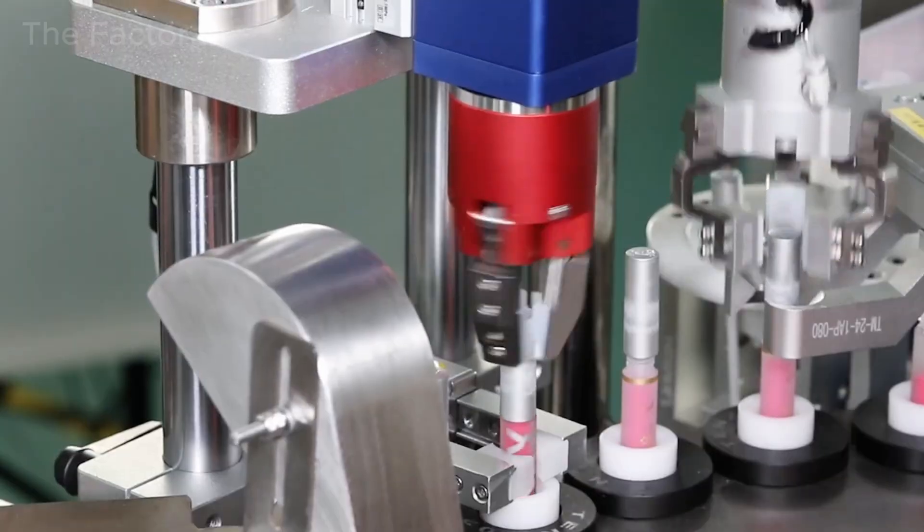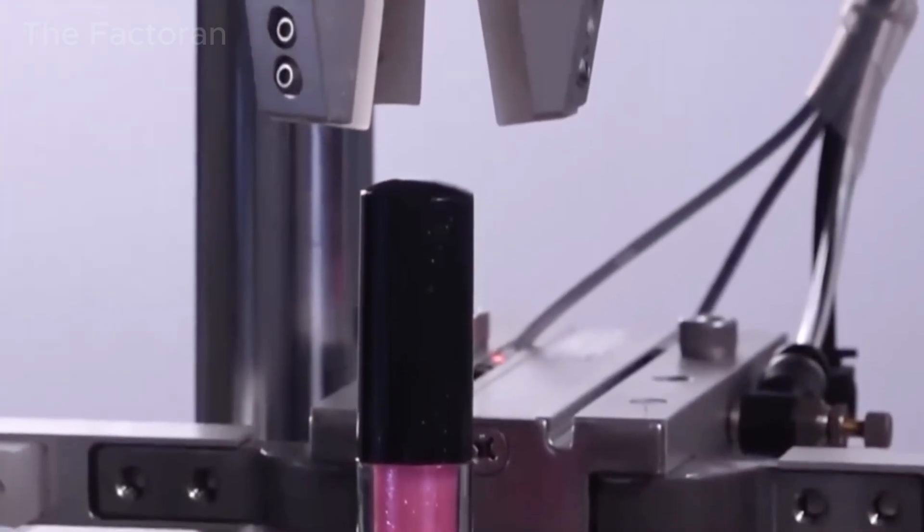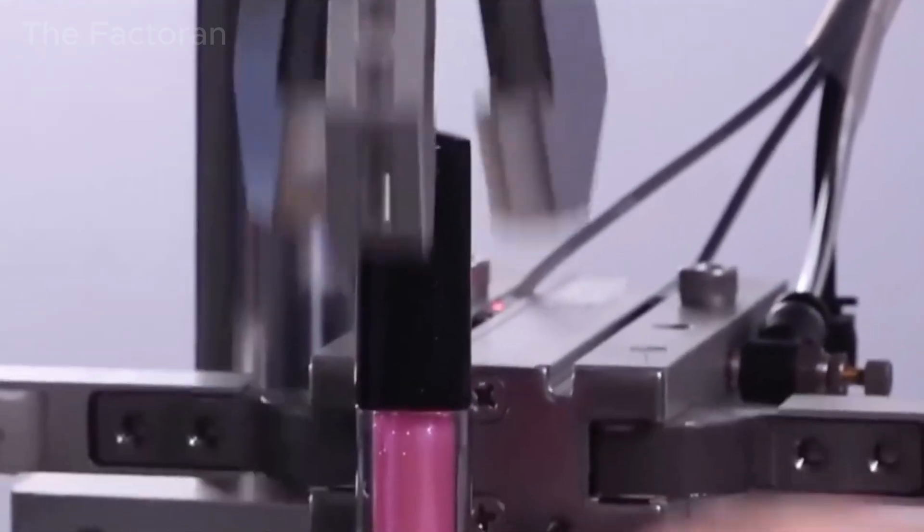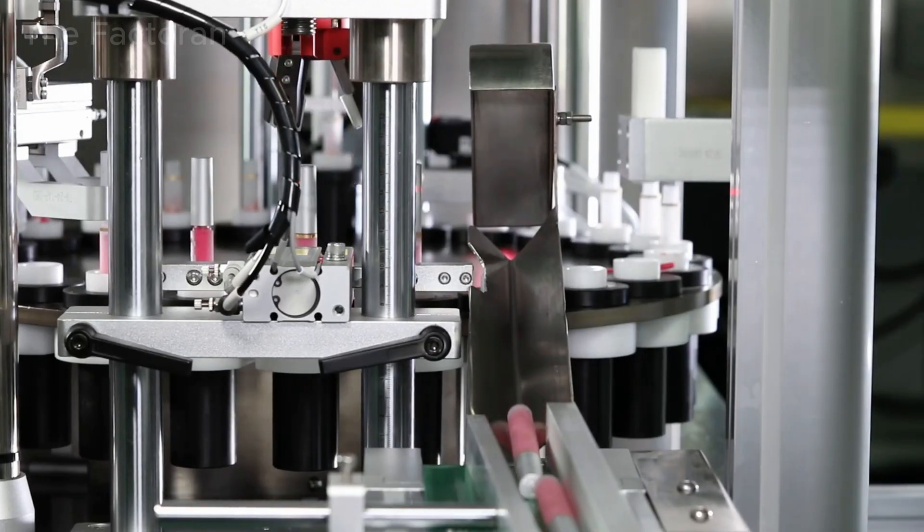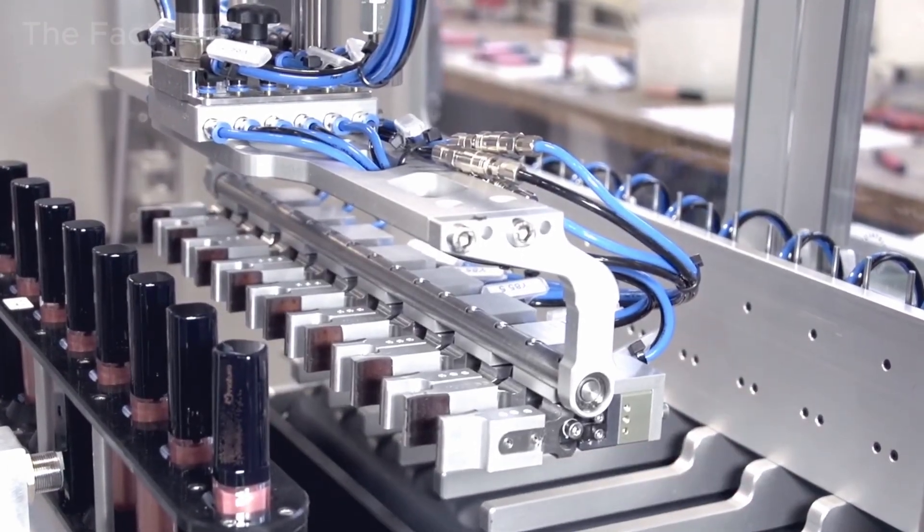Align it precisely along the axis, and screw it onto the tube using a servo-controlled mechanism that tightly regulates torque. This ensures a secure, leak-proof seal while keeping the applicator tip and bottleneck stable throughout the product's lifespan.